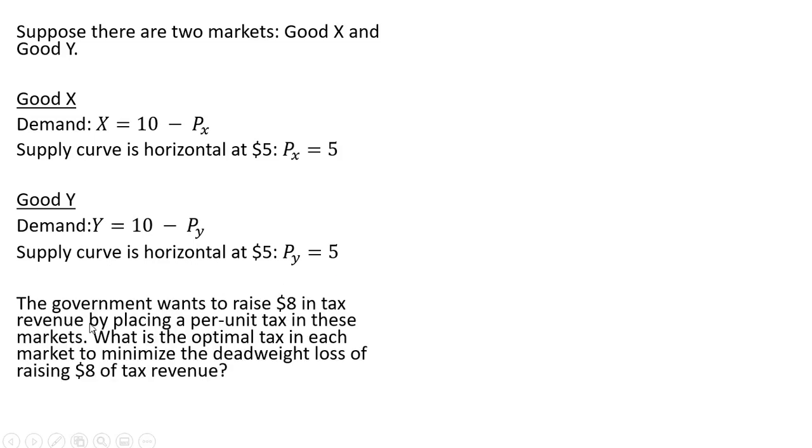And here is our problem. The government wants to raise $8 in tax revenue by placing a per unit tax in each of these markets. What is the optimal tax in each market to minimize the deadweight loss of raising $8 of tax revenue?